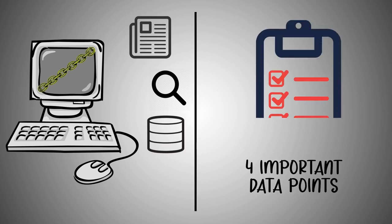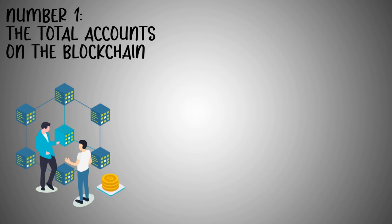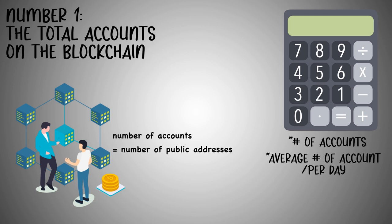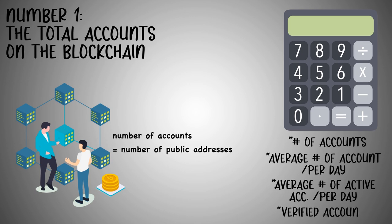Number one: the total accounts on the blockchain. The number of accounts is equal to the number of public addresses. For an accurate calculation, analysts consider the number of accounts, the average number of accounts created per day, the average number of active accounts per day, and verified accounts. All of these points are relevant to measuring activity on the blockchain network, which further contributes to forecasting the future value of Bitcoin.